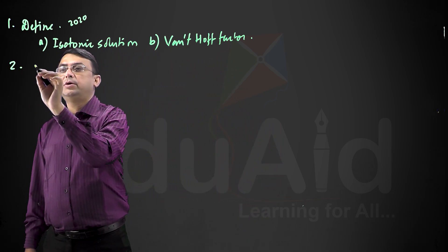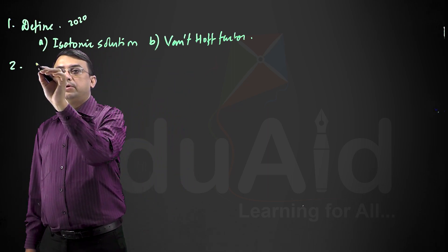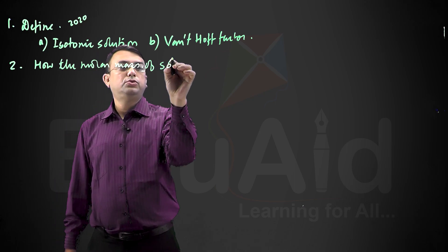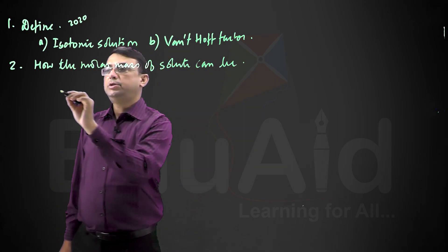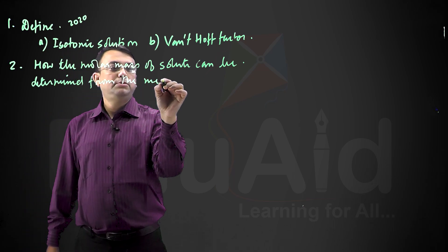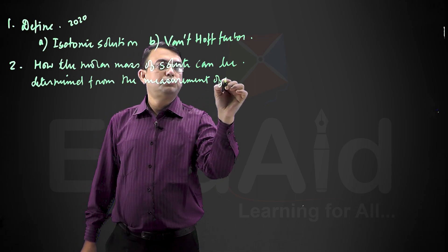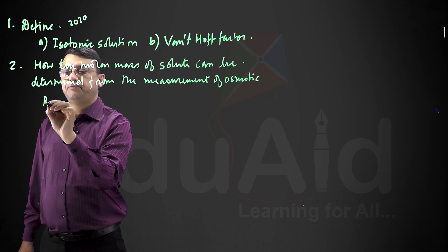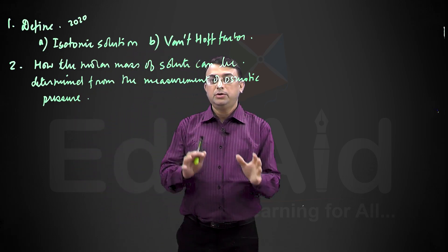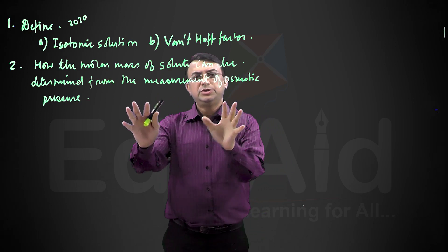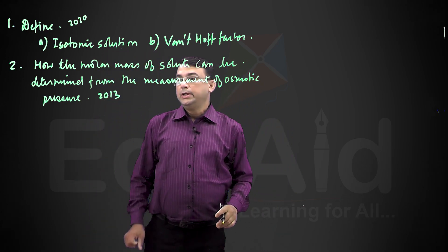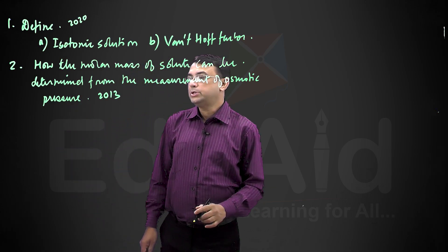One more question that has been asked, going back to 2013, is: how can the molar mass of a solute be determined from the measurement of osmotic pressure? This calculation has been given in the osmotic pressure part, so you can refer to that part. It was asked in 2013.